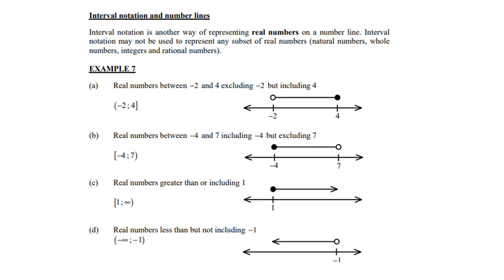Look at b, real numbers between -4 and 7. You must include -4 and exclude 7. So if you look at the notation, a square bracket on the side of -4 and a round bracket on the side of 7. Therefore, a dark dot by -4 and an open circle by 7.